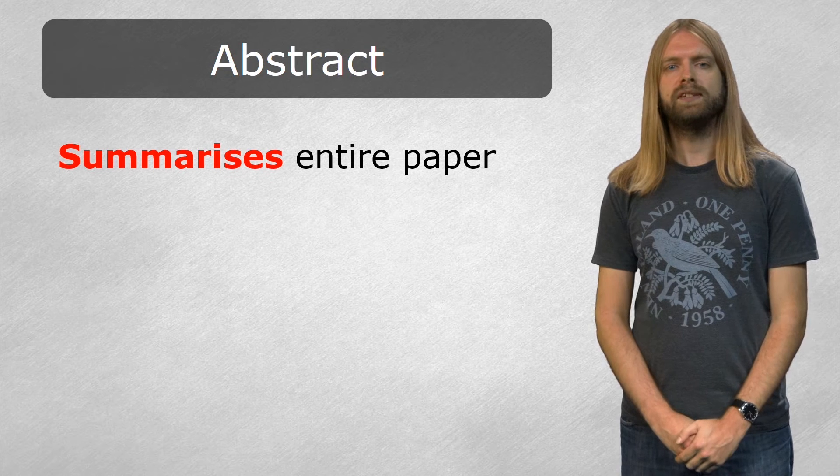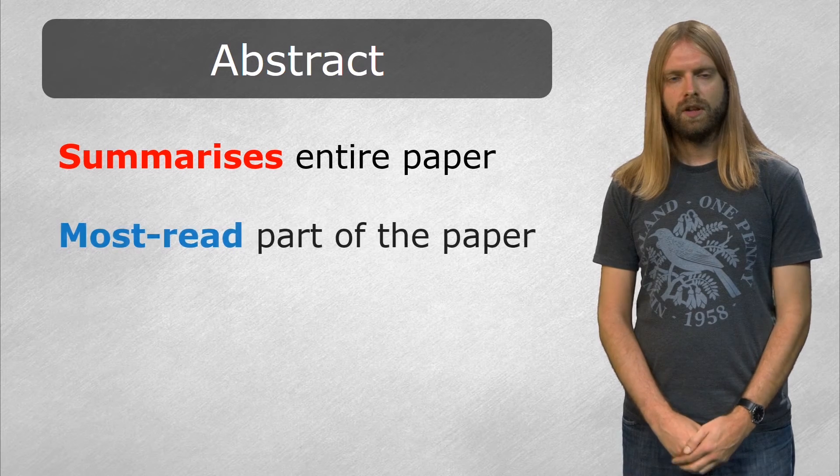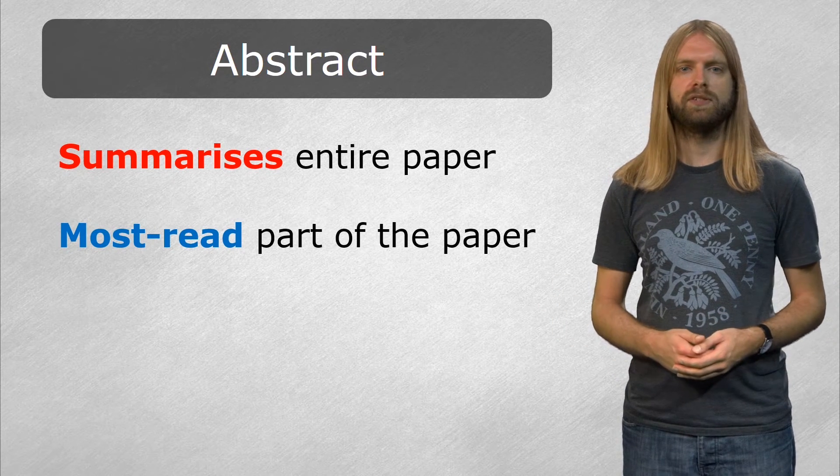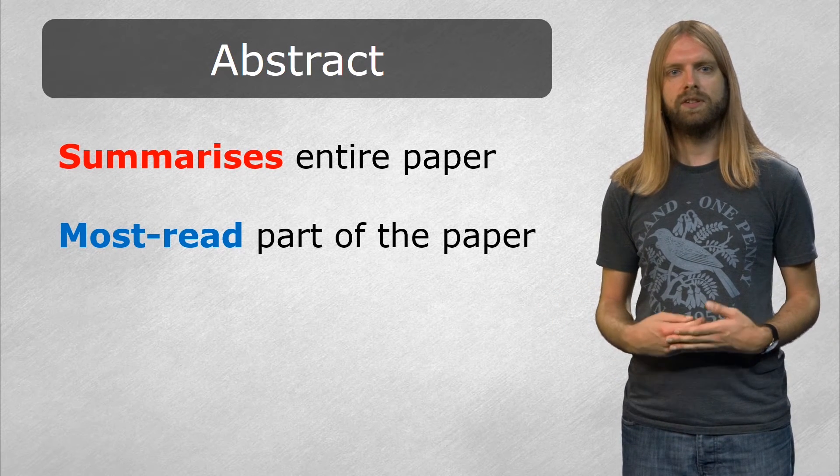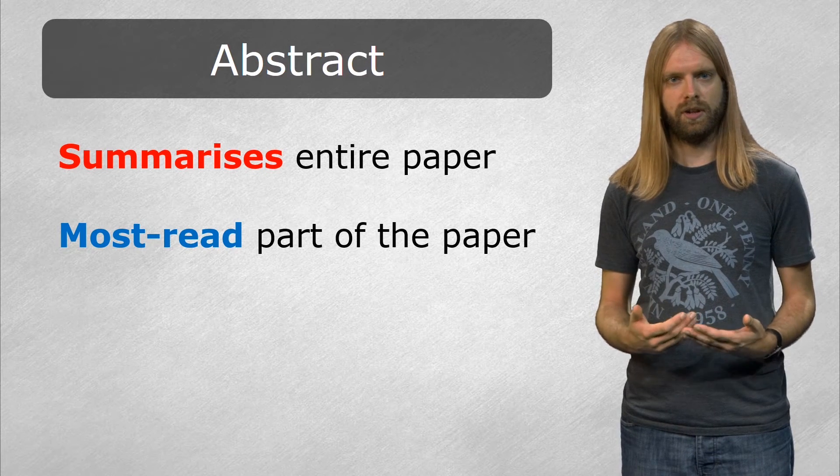Abstracts allow scientists to more easily keep up with new findings and decide which papers to read in detail. Far too many papers are published for scientists to read all of them fully, so the entire paper is usually only read by those with a specific interest in the topic and how the research was done.